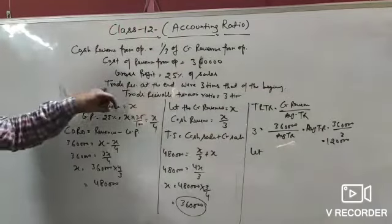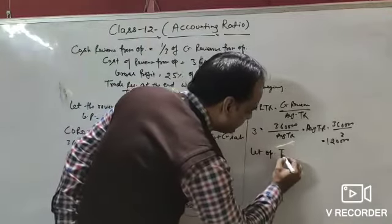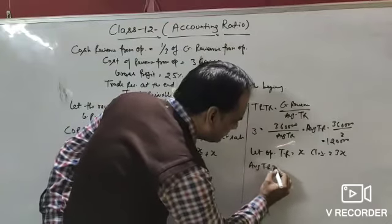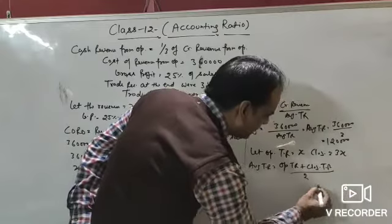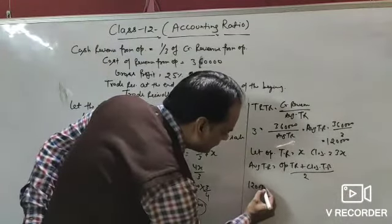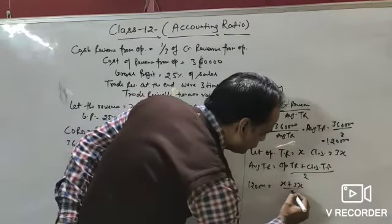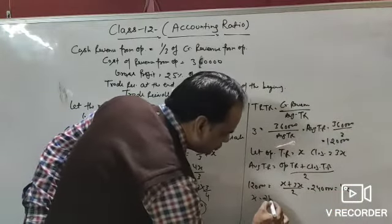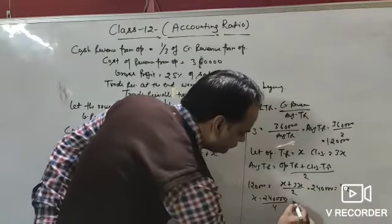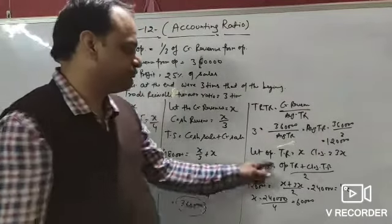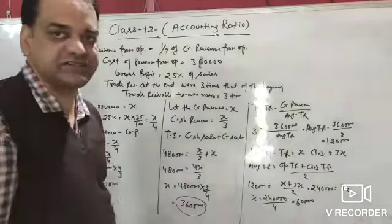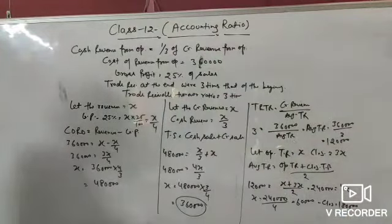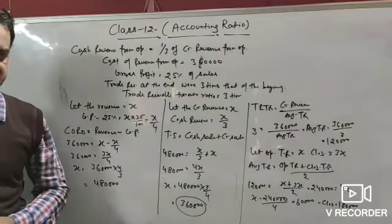Since closing trade receivable is 3 times the opening, let opening = x and closing = 3x. Average trade receivable = (x + 3x) / 2 = 4x/2 = 2x = ₹1,20,000. So x = ₹60,000 (opening trade receivable). Closing trade receivable = 3 × ₹60,000 = ₹1,80,000.